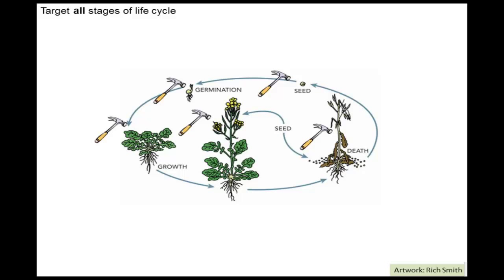This slide says 'target all stages of the life cycle.' The weed shown here is yellow or wild mustard. This is the life cycle of an annual weed: we start with seed production, the mature plant produces seeds that are dispersed to the soil, the seeds survive at some rate, they germinate, they grow, and then become reproductively mature again. Each of those life stage transitions is an opportunity to do something.